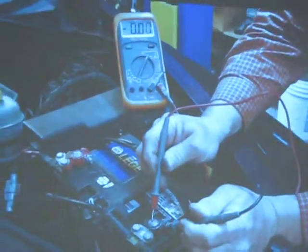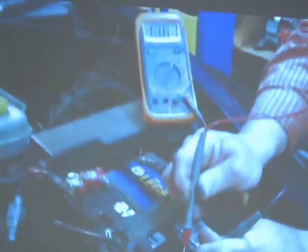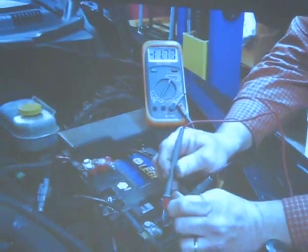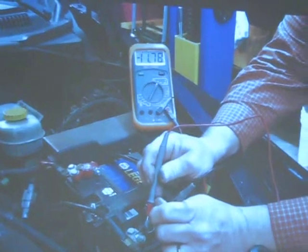Then we move over to the negative, and we do the same thing. From negative post to negative clamp should be zero. But when I touch it to it, what do we get? We get 11.77 volts.